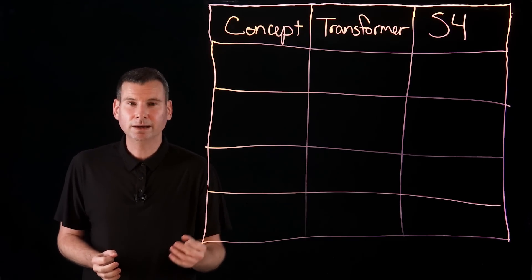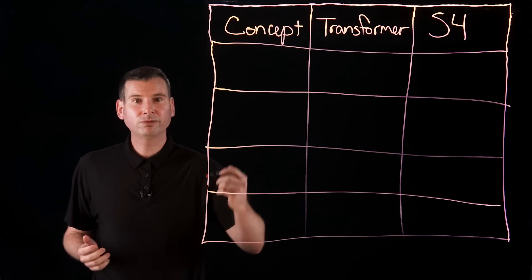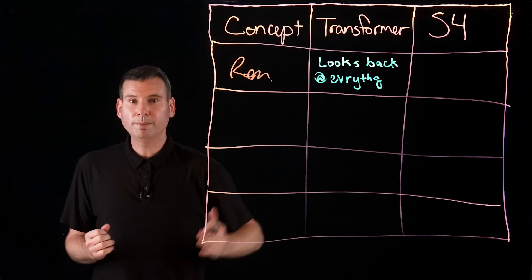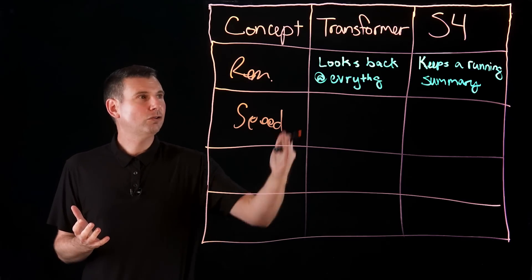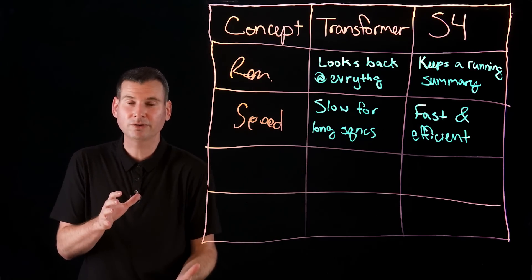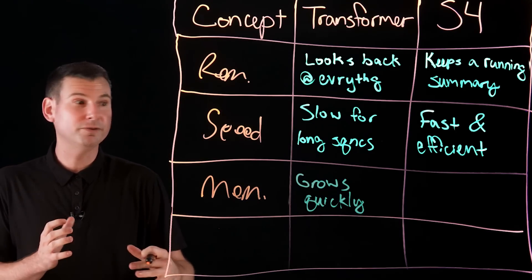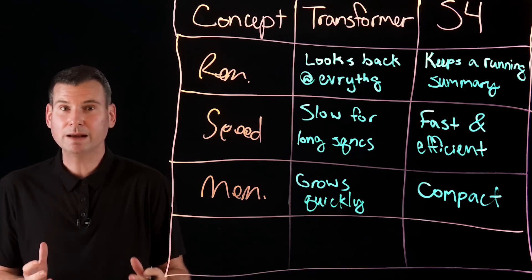The key idea is to model the dynamics of memory with a state vector that's continually updated. A transformer remembers everything that happens; a state-space model remembers only what matters. In terms of speed, it's very slow for a transformer to process everything it remembers, whereas S4 is very fast and efficient with those two equations. For memory, transformer memory grows very quickly with exponential growth, while S4 is very compact, modeled by those two equations. As an analogy: a transformer has to reread almost an entire book before answering, whereas S4 can read only its notes and begin to answer the same question.